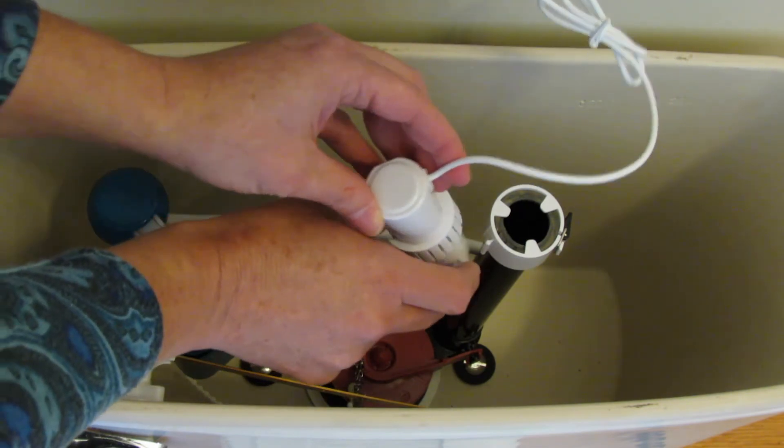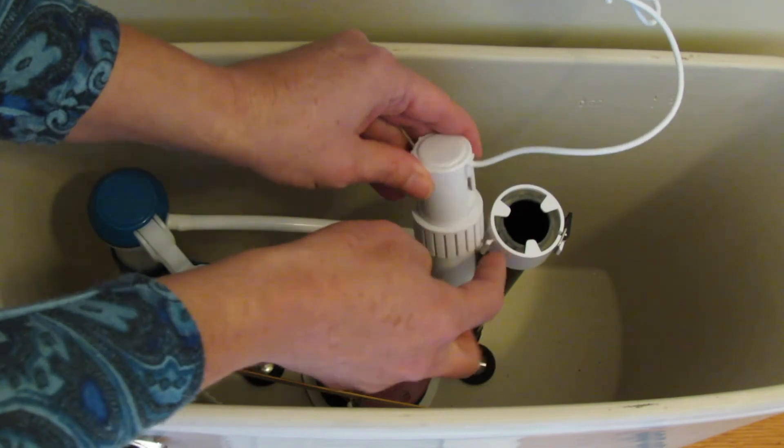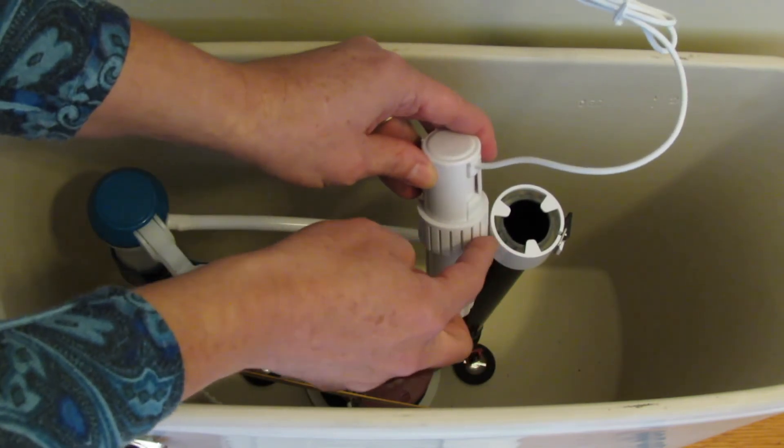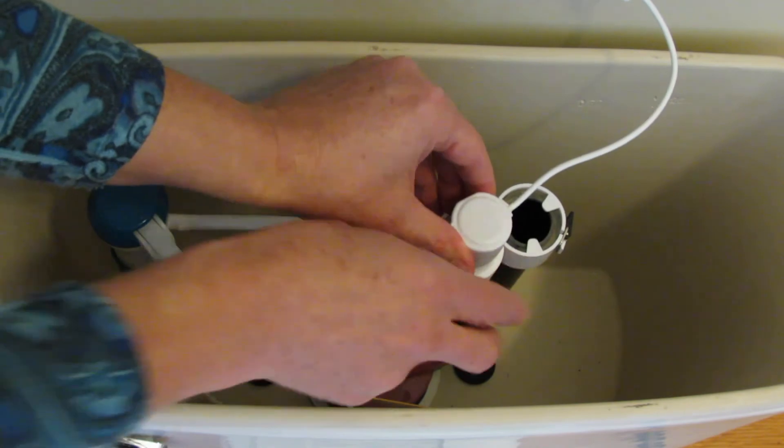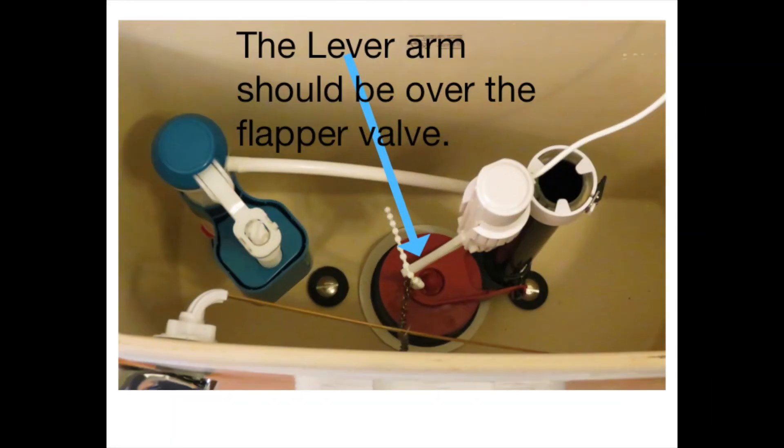Once you have that in position, line up the tab with one of the grooves on the motor and press firmly down. Make sure the lever arm is over the flapper valve.